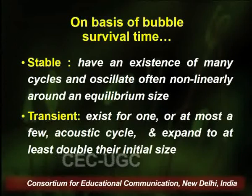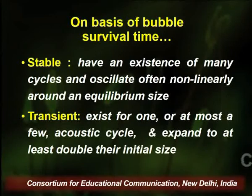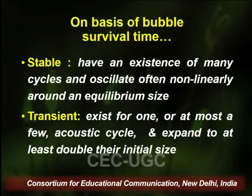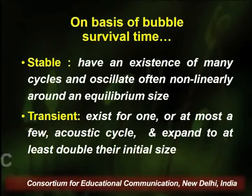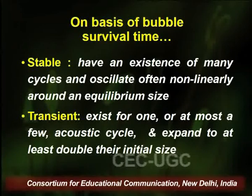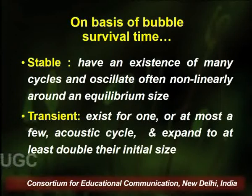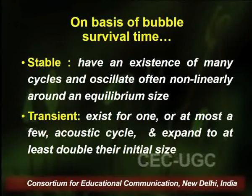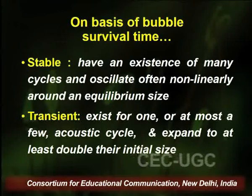Bubbles can also be classified on the basis of their survival time — they can be stable or transient. Stable bubbles are those which survive through numerous cycles of compression and rarefaction, floating around in an equilibrium size without expanding. Transient bubbles are those which exist only for one or a few cycles of compression and rarefaction — they expand rapidly in size and explode violently or vigorously.